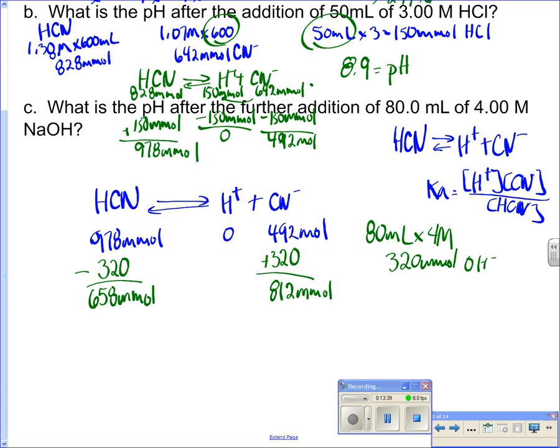And what are they floating in? Well, they were initially floating in 600. We added 50. So that's 650. And then we added 80. So if I do 650 plus 80, I end up with 730 milliliters.